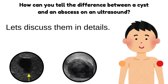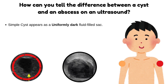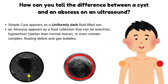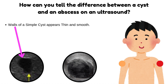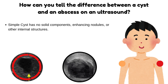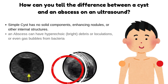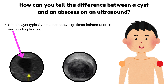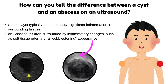In detail: a simple cyst appears as a uniformly dark fluid-filled sac, while an abscess appears as a fluid collection that can be anechoic, hypoechoic (darker than normal tissue), or even contain complex floating debris and gas bubbles. The walls of a simple cyst appear thin and smooth, while the walls of an abscess can have irregular or poorly defined borders. A simple cyst has no solid components, enhancing nodules, or other internal structures, whereas an abscess can have hyperechoic bright debris, loculations, or even gas bubbles from bacteria. A simple cyst typically does not show significant inflammation in surrounding tissues, while an abscess is often surrounded by inflammatory changes such as soft tissue edema or a cobblestoning appearance.